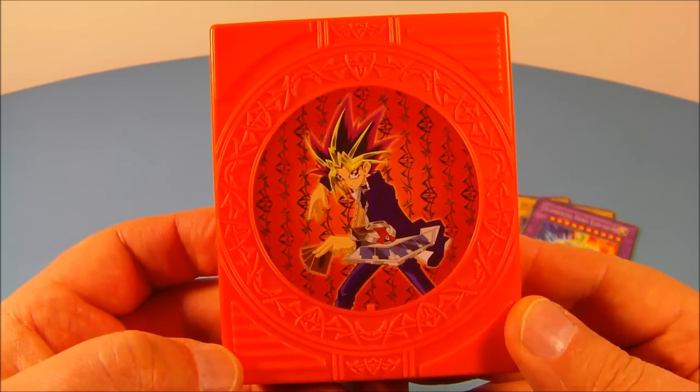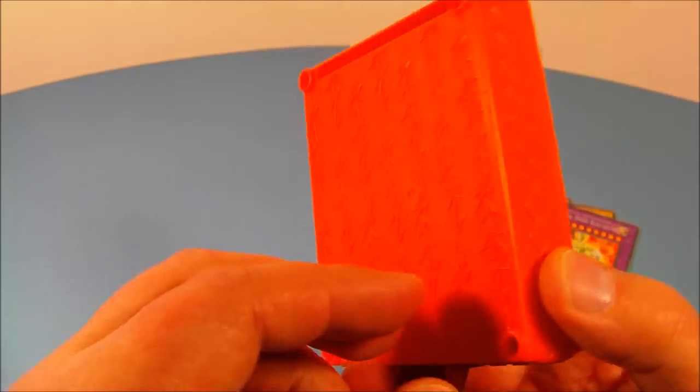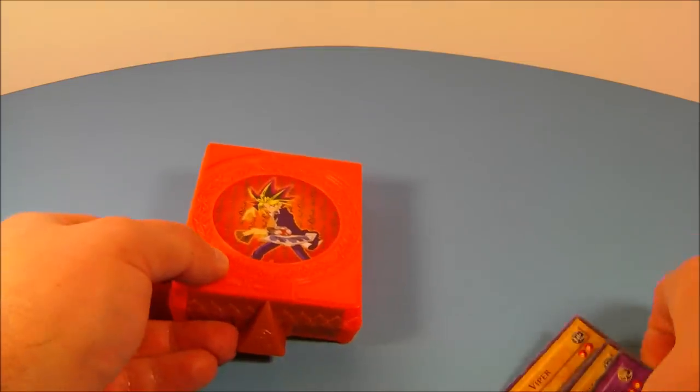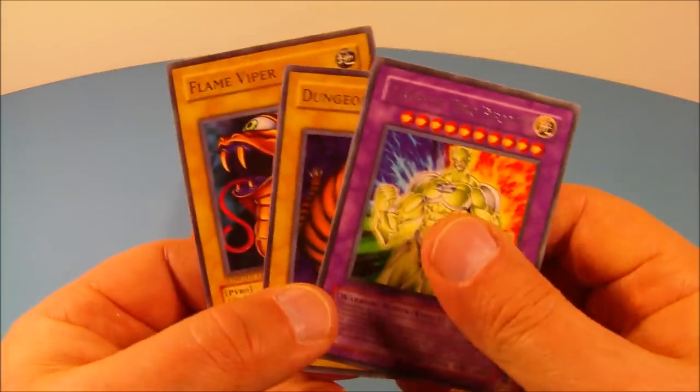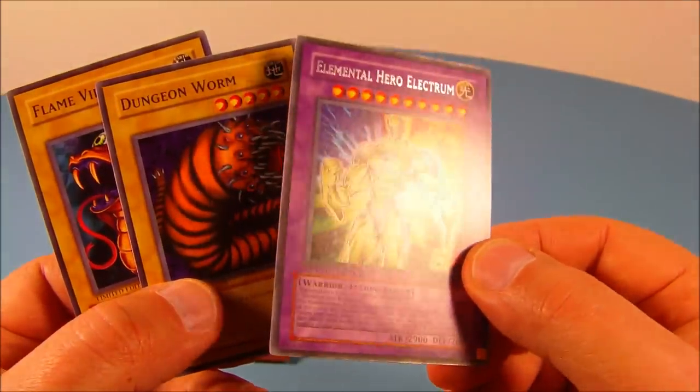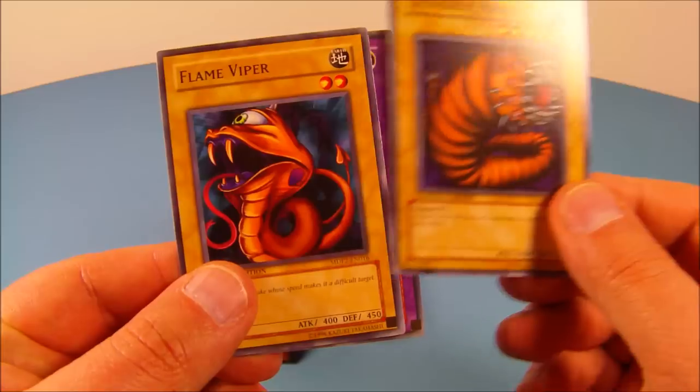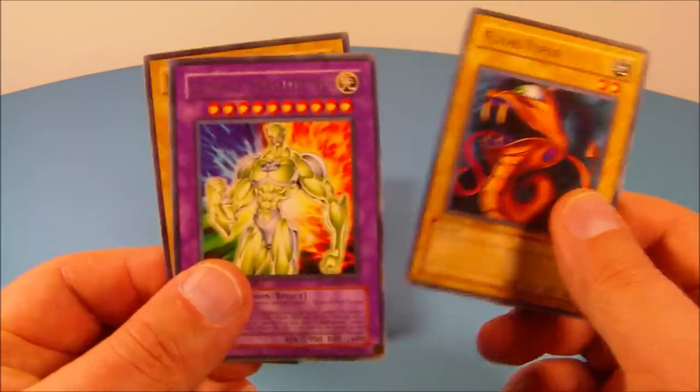Up at number seven is the Yami Yugi. This is kind of cool. It's like a magic trick box. It's really awesome. I like this. And then here are the three cards that we got with the pack. And we have the Elemental Hero Electrum which is really awesome. I'm assuming this is the rare because it's got silver foil. And then we have the Dungeon Worm and the Flame Viper. Awesome. Man.